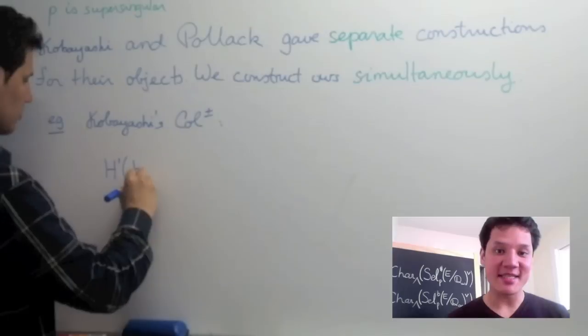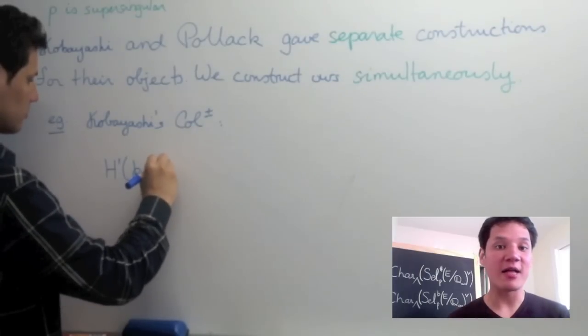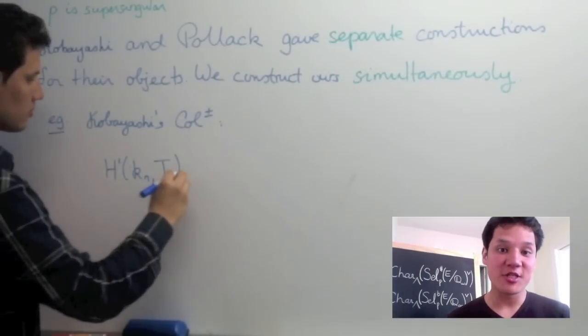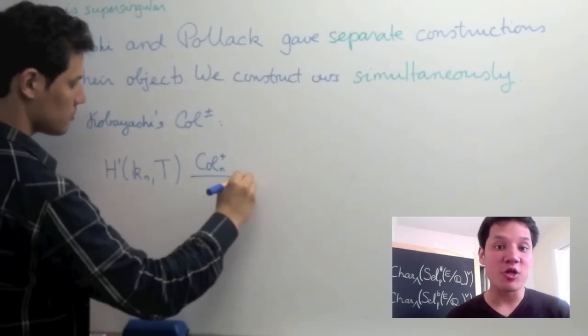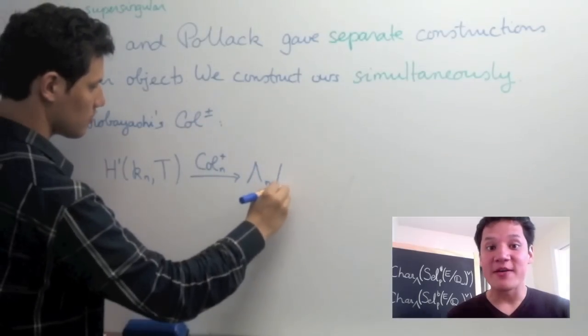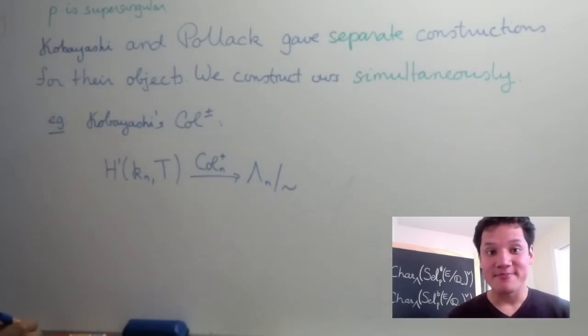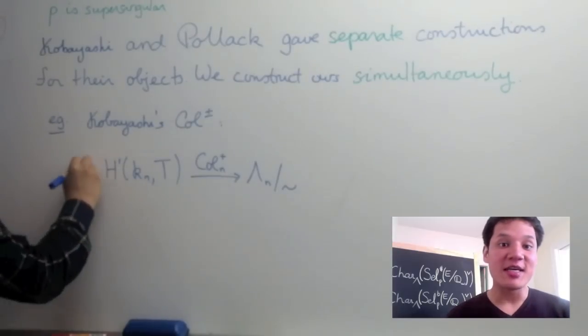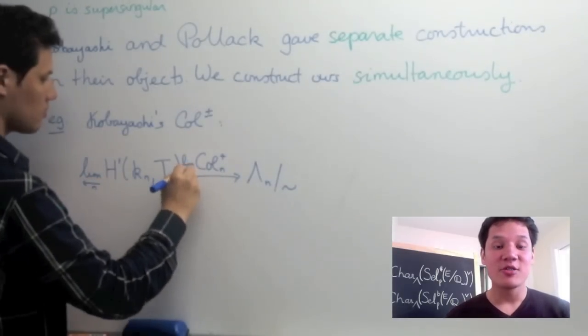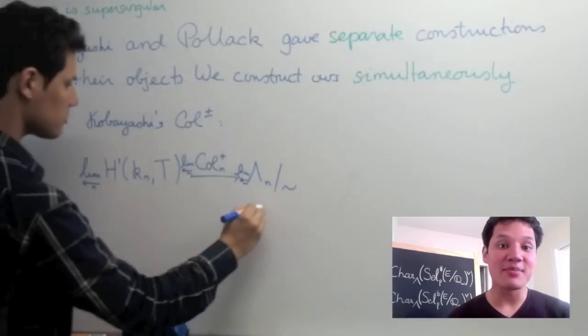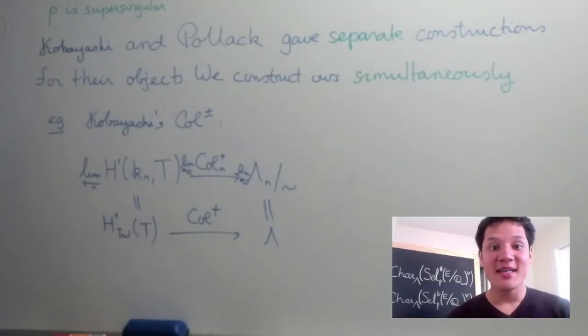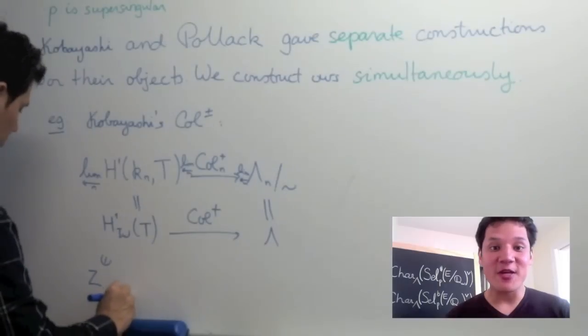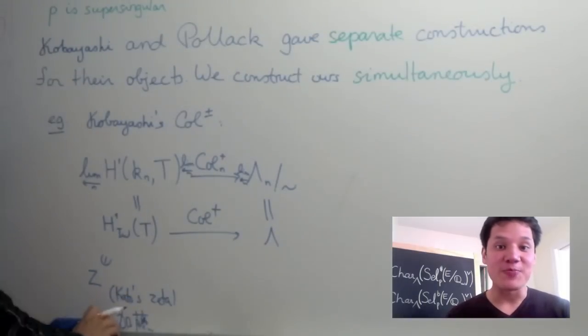Let me give you an example by elaborating a little bit on Kobayashi's plus Coleman map. Given an integer n, we may associate local Galois cohomology from which there is a map Ko sub n plus that maps into a standard quotient of the Iwasawa algebra modded out by a further condition that corresponds to the plus. Kobayashi then took the inverse limit of all these to obtain the desired plus Coleman map that maps from Iwasawa cohomology into the Iwasawa algebra. It has the nice feature that the image of Kato's zeta element maps to one of Pollack's p-adic L functions via this plus Coleman map.